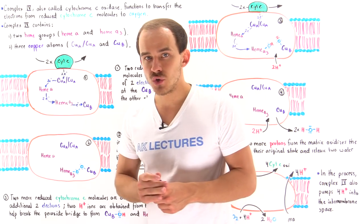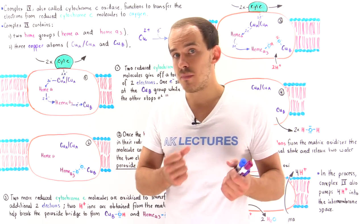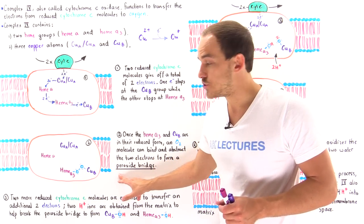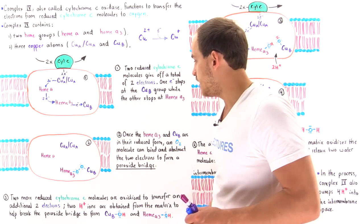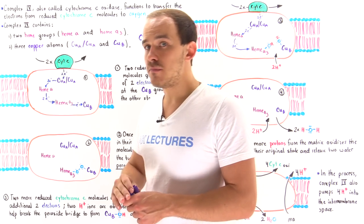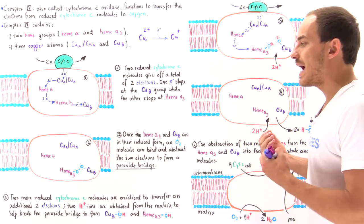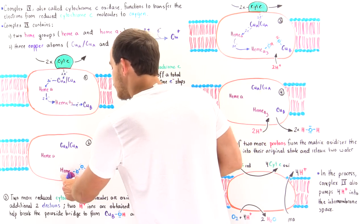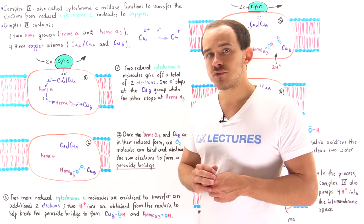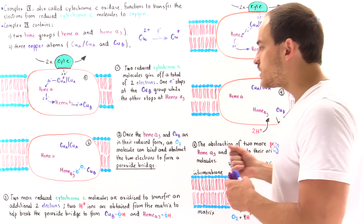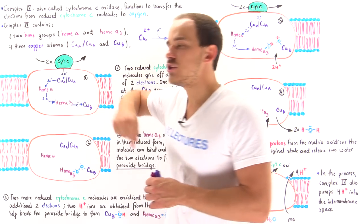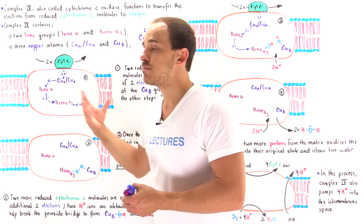In Step 2, an oxygen molecule — the same oxygen we breathe in from the environment — is abstracted and used to form a peroxide bridge between heme A3 and copper B. This occurs only once both heme A3 and copper B are in their fully reduced form. The diatomic oxygen molecule is used to build this peroxide bridge between these two centers.